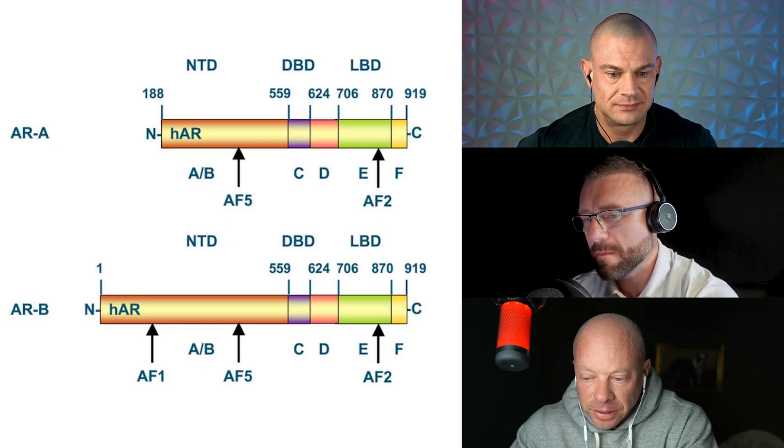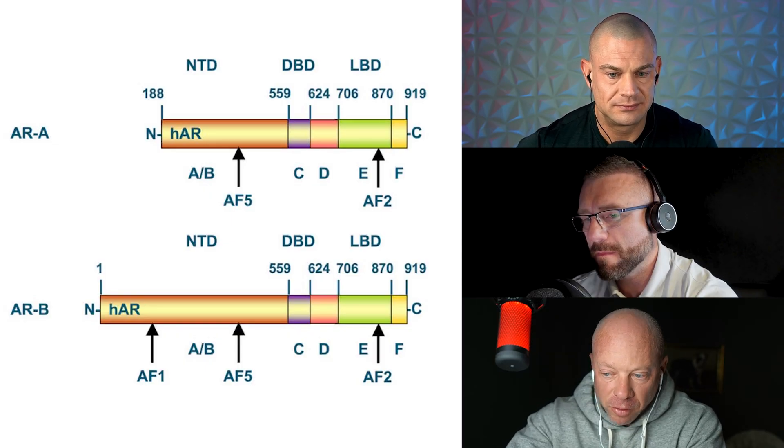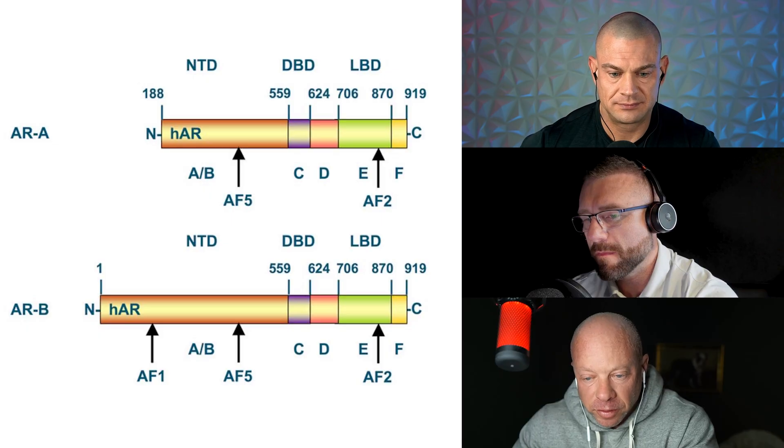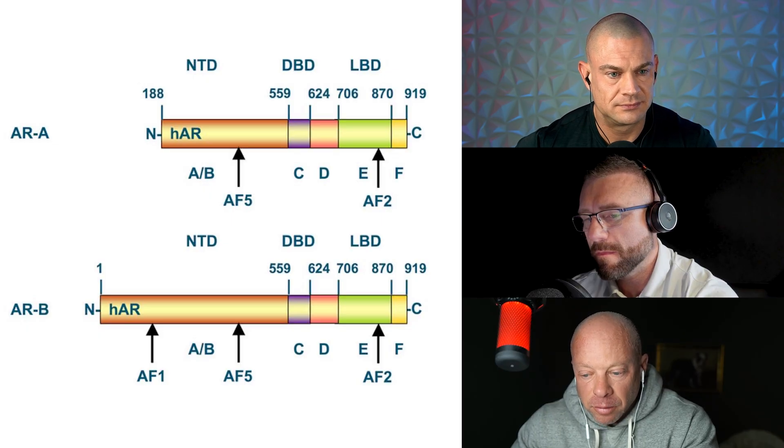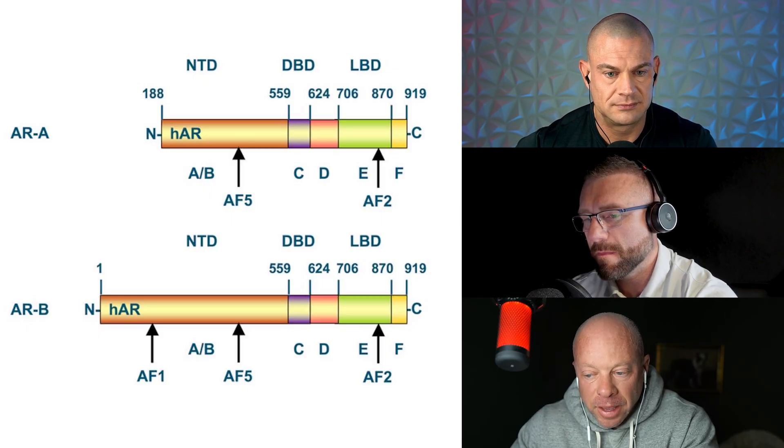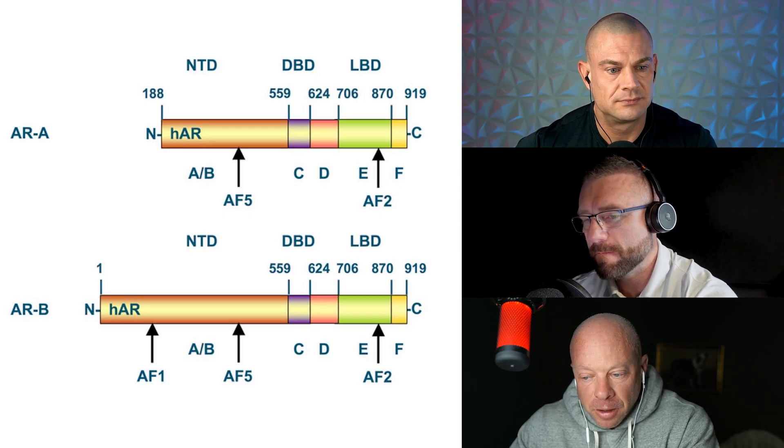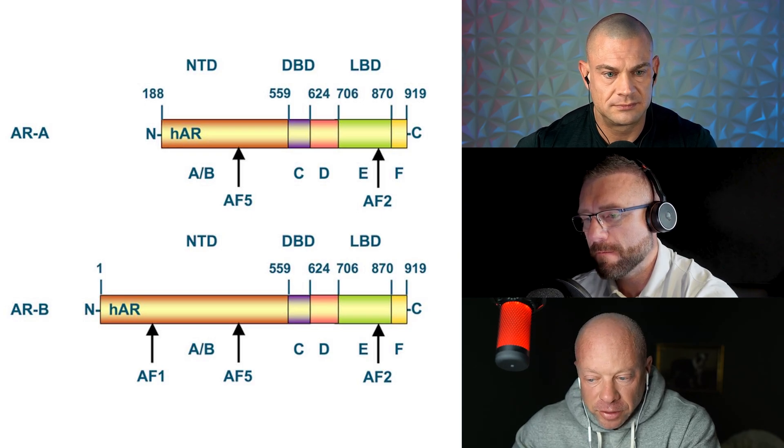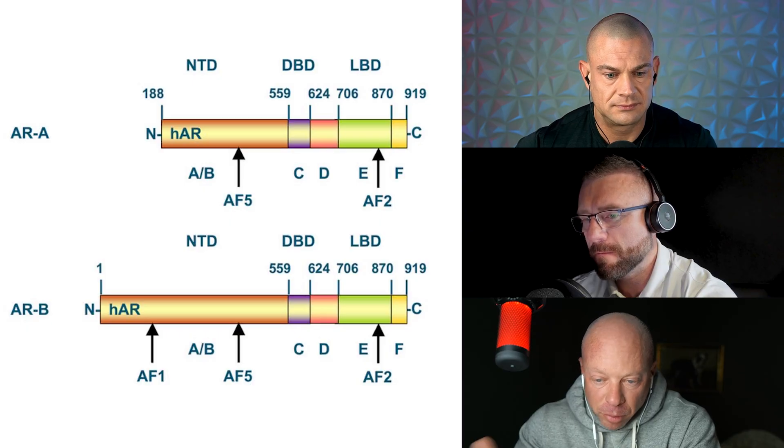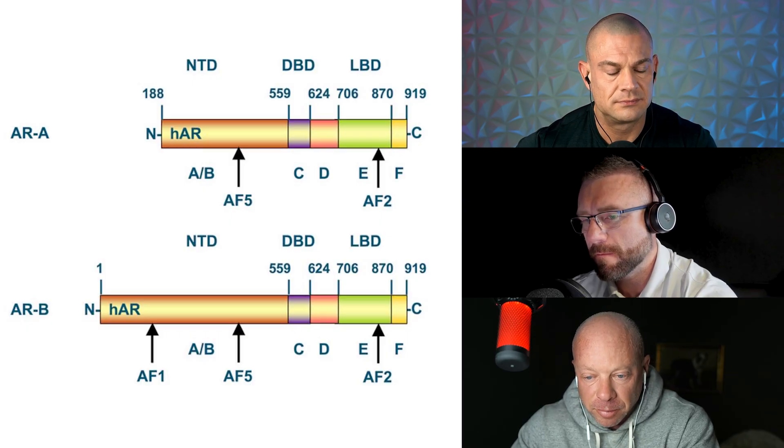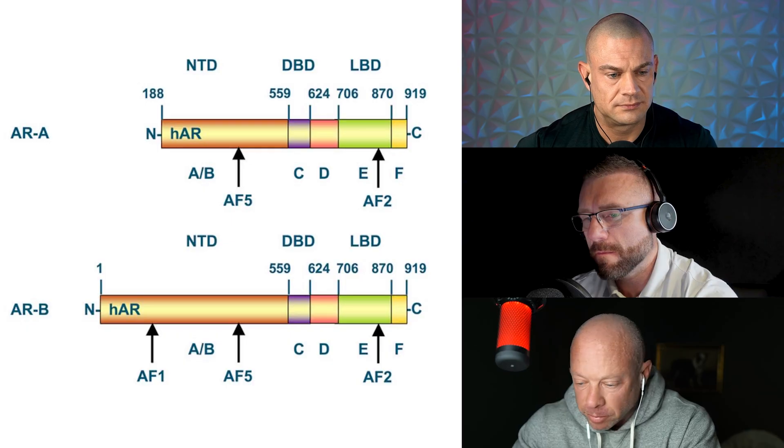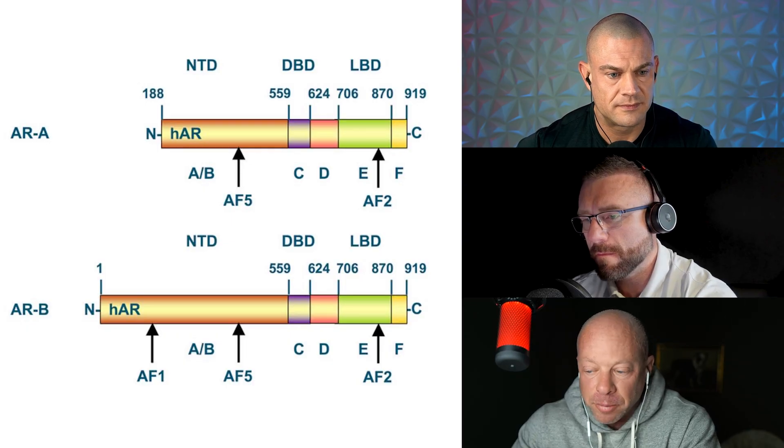And so while the ligand binding domain at the end on the far right is typically what we would consider where the androgen would bind to, missing the AF1 part inhibits the androgen from fully binding to this. So then you have a bunch of things that occur downstream. Then estrogen can basically push off the androgen because it's not fully bound. Normally when an androgen binds, it'll push estrogen off. But now the opposite thing is going to happen.